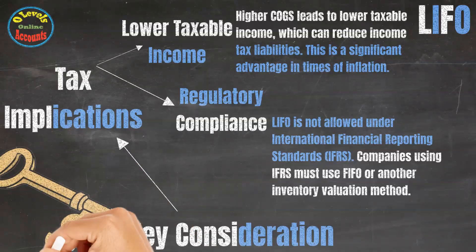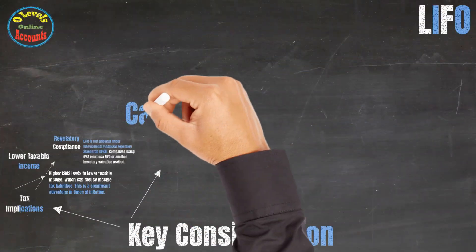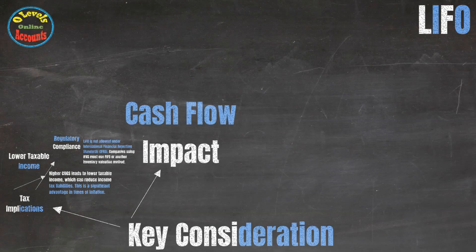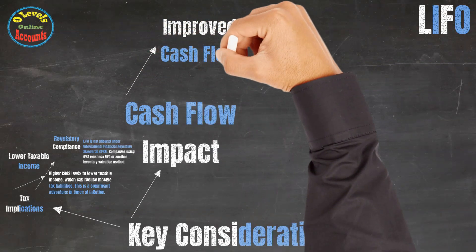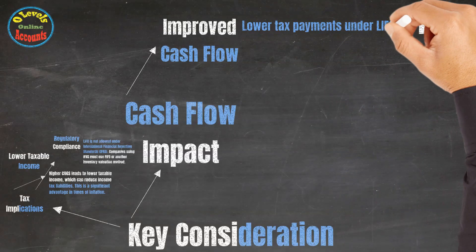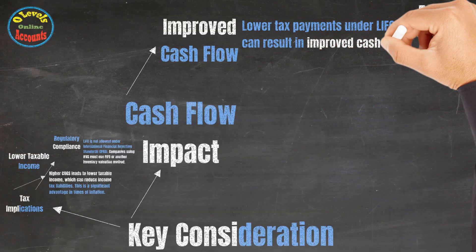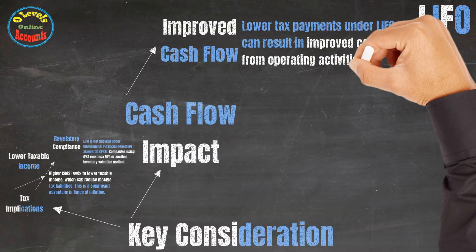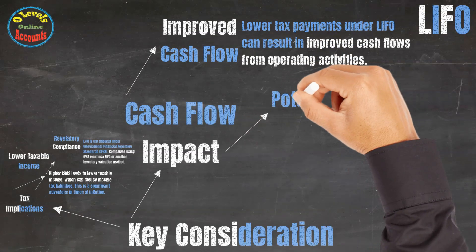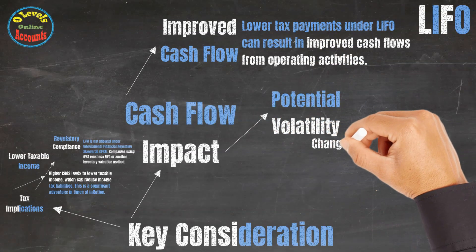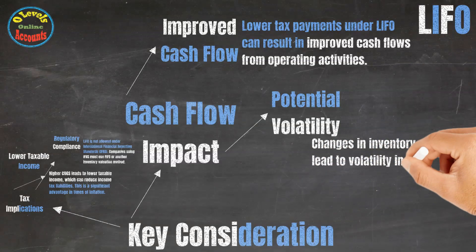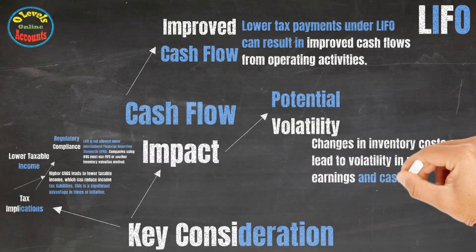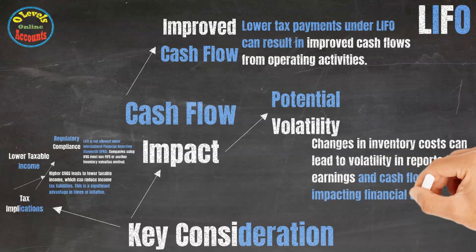The second key consideration is cash flow impact. First, improved cash flow: lower tax payments under LIFO can result in improved cash flows from operating activities. Second, potential volatility: changes in inventory costs can lead to volatility in reported earnings and cash flows, impacting financial stability.